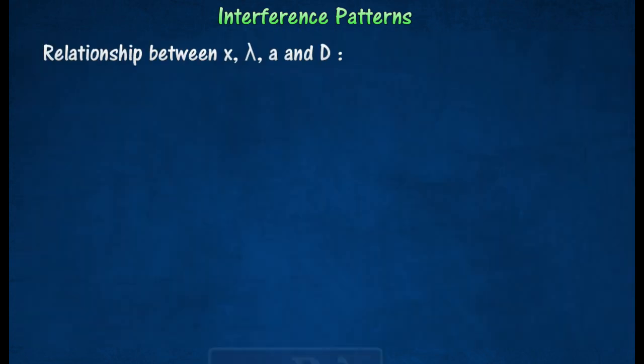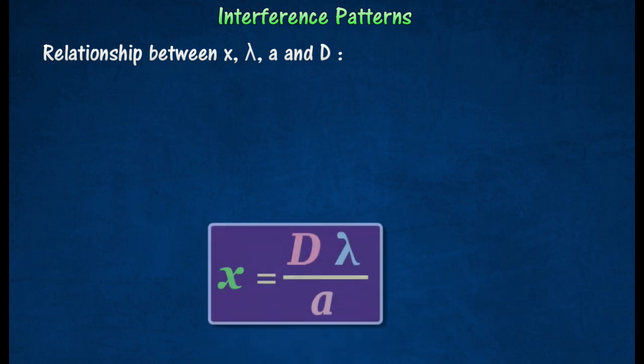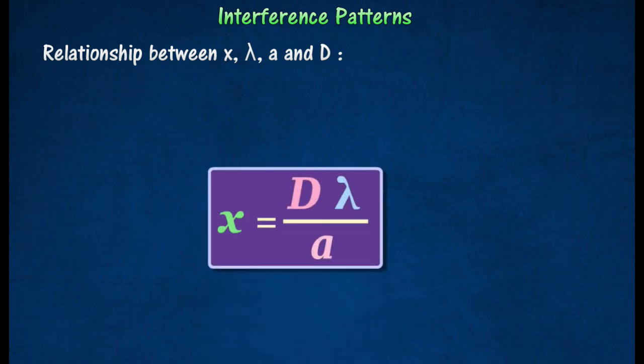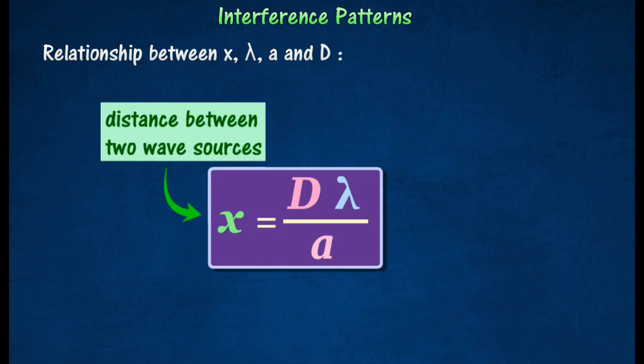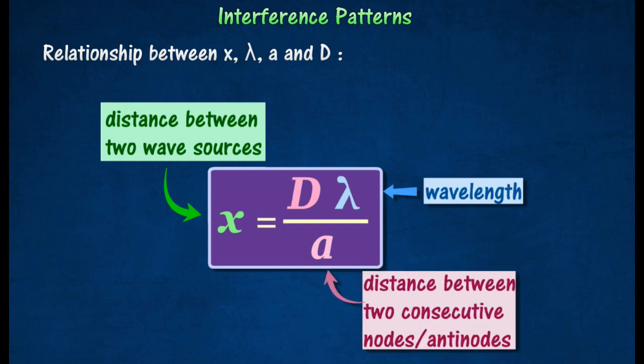From the interference pattern, the superposition of the two sets of waves can be studied by the following formula. The distance of separation x between two successive antinodal lines or nodal lines depends on the wavelength λ, the distance of separation between the two coherent sources a.